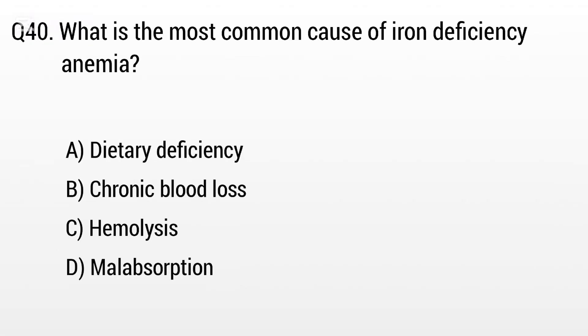Question 40. What is the most common cause of iron deficiency anemia? The right answer is Option B: Chronic blood loss.